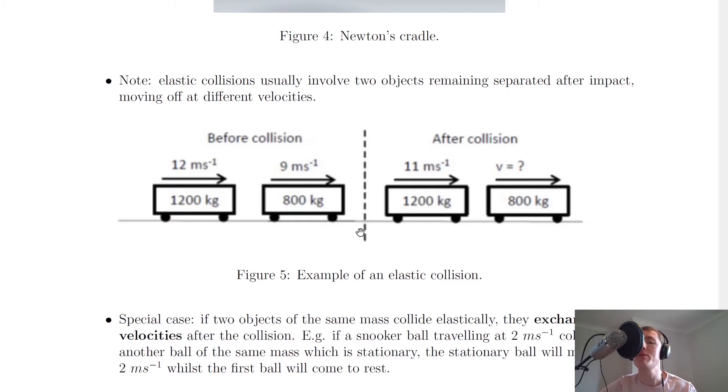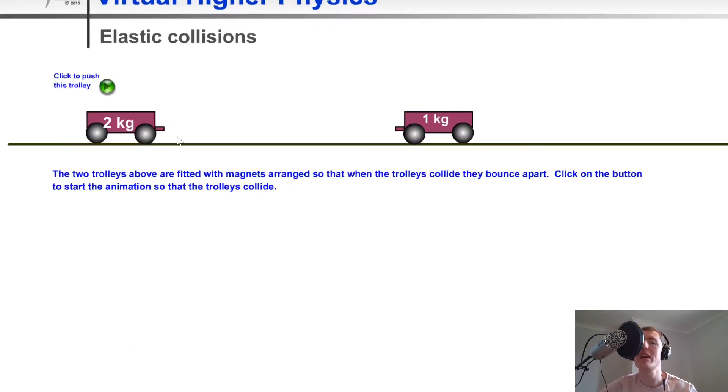So to give you an example of this, I'm going to show you an animation. So here we have a two kilogram trolley and a one kilogram trolley. And the two kilogram trolley is going to move into the one kilogram trolley, which is initially stationary.